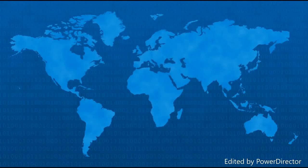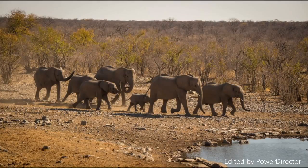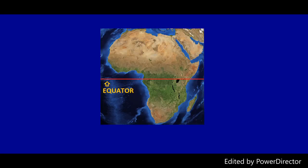Welcome to this video about the climate regions of Africa. Africa has a variety of different climate zones. Africa extends into both the northern and southern hemispheres, so while winter is happening in one part of the continent, summer is happening in another. Most of Africa, however, experiences hot weather most of the year.